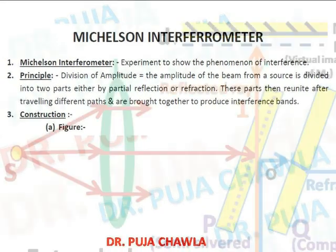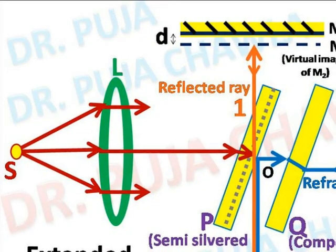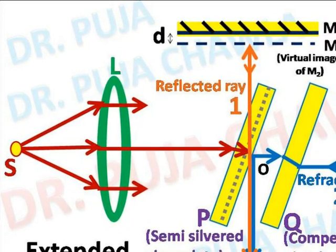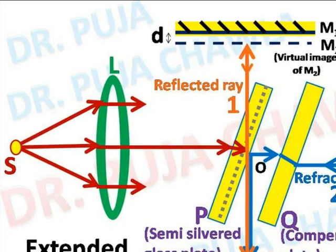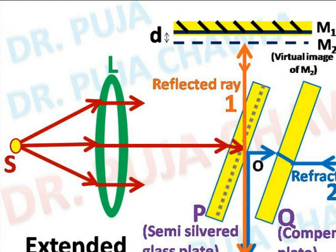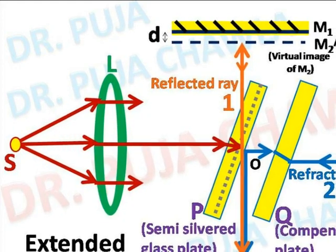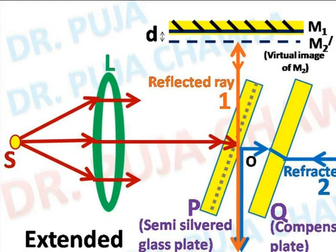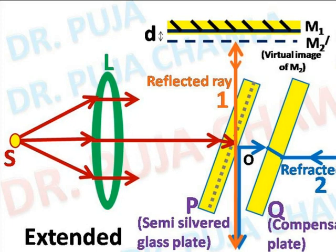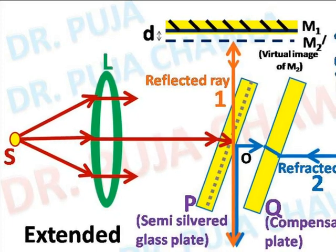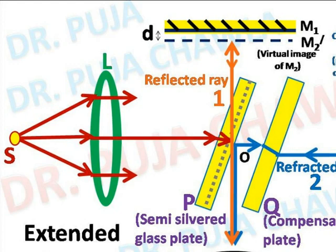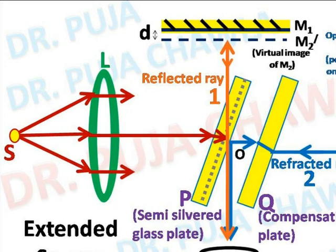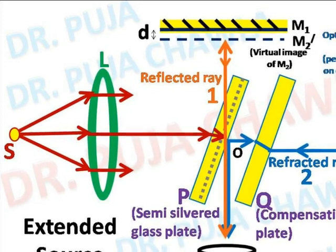Next is the construction. The first component is S, which is a source of light. Next is L, a convex lens. Both S and L together constitute an extended source of light that gives a parallel beam of light. P is a semi-silvered glass plate — it is semi-silvered because it acts as both a reflector and a transmitter. Next components are M1 and M2, two optically flat mirrors.